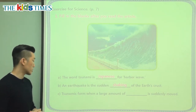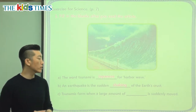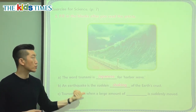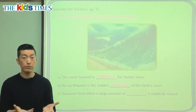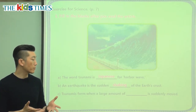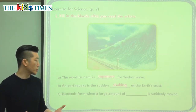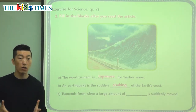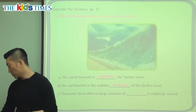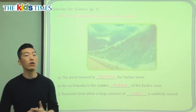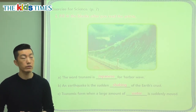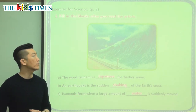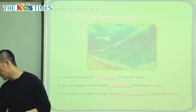The last question: 'Tsunamis form when a large amount of what is suddenly moved?' We said that tsunamis happen usually in the ocean and something is happening there. 'Amount' means how much of something — so a large amount of what is suddenly moved? We know that tsunamis are because of ocean water. So when a large amount of water is suddenly moved, that's when the wave comes onto the land.